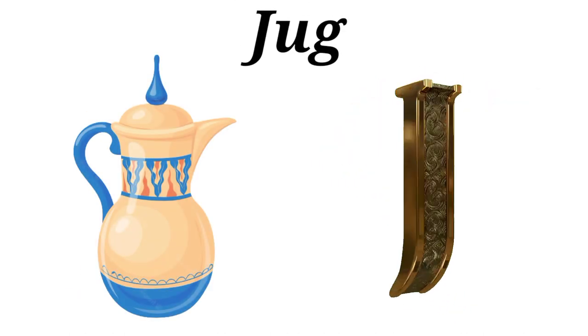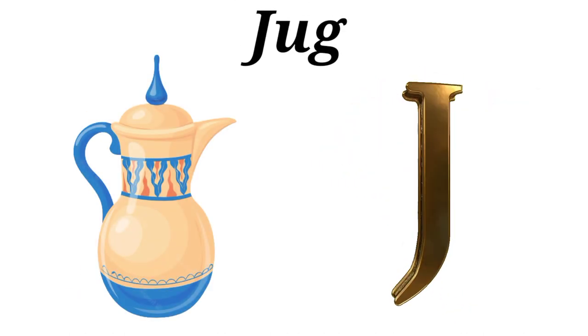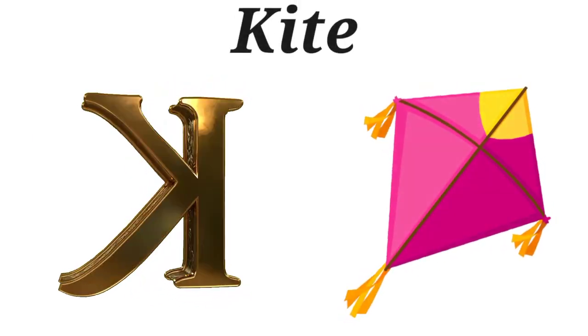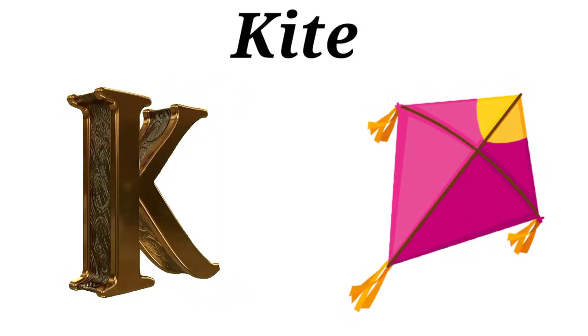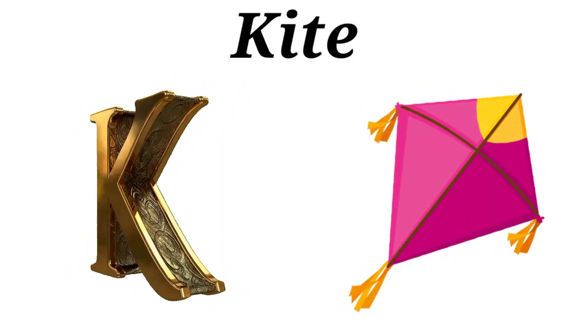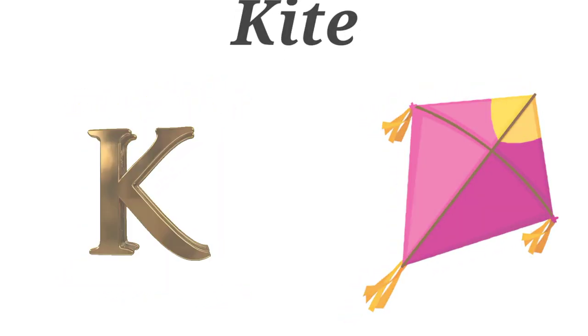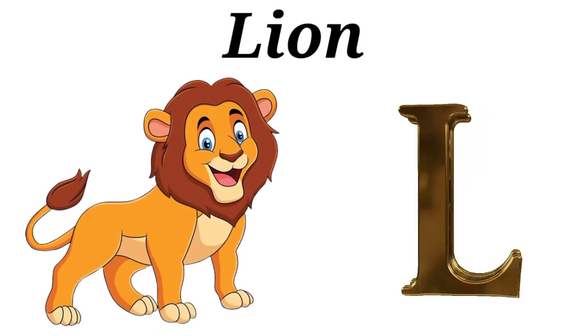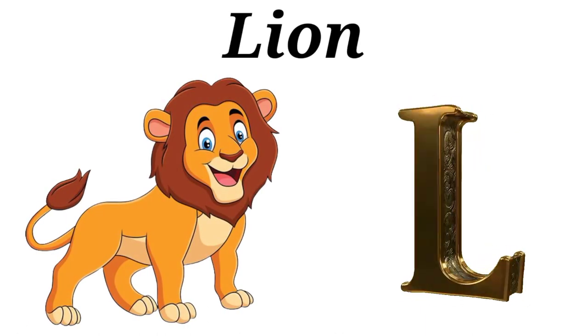J is for Jug. J, J, Jug. K is for Kite. K, K, Kite. L is for Lion. L, L, Lion.